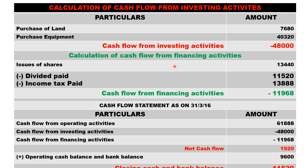Calculation of cash flow from finance activity: we have issue of share thirteen thousand four forty, less dividends paid eleven thousand five twenty, less IT paid thirteen thousand eight eighty eight. You get minus eleven thousand nine sixty eight, indicating that it is an outflow not an inflow.